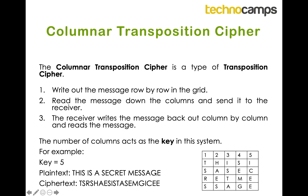The receiver can then write the message back out column by column and read the message off row by row. There's an example here where the message is 'this is a secret message'. The key is five, so we've got five columns. We write it across the rows and read it off the columns to get our cipher text.